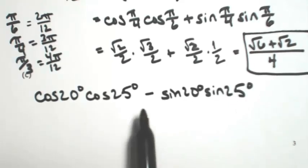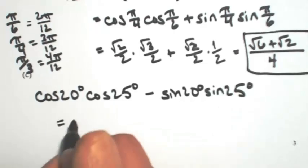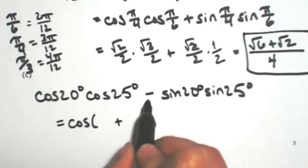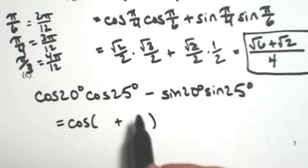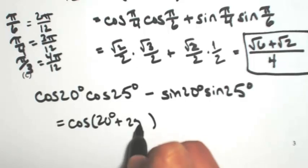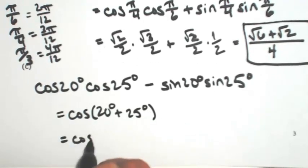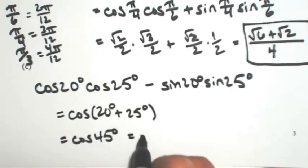So looking at the pattern, cosine, cosine, sine, sine, this is going to be the cosine of the sum of two angles, because I have minus. And those two angles are the 20 and the 25 degrees. So this becomes the cosine of 45 degrees, which is square root of 2 over 2.